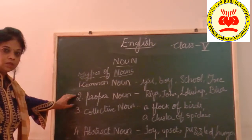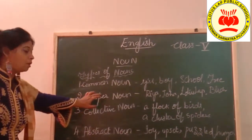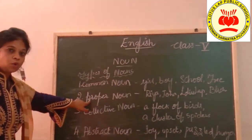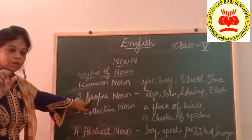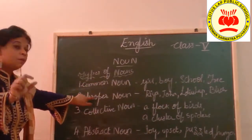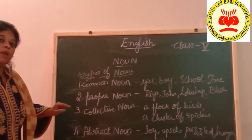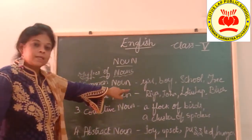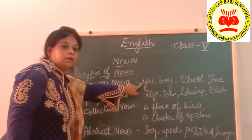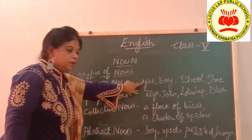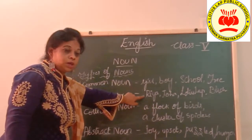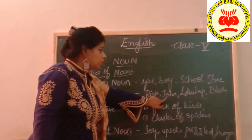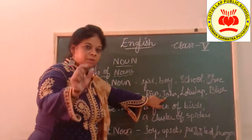Now when you come down a little bit, you see proper noun. Please see the difference. Proper means particular — not common, but particular. We are calling one specific person or thing from among a common group. If you see the examples, I have given common noun 'girl' and in proper noun I gave a particular name to the girl — Rhea. Boy is a common group; the particular noun is John.